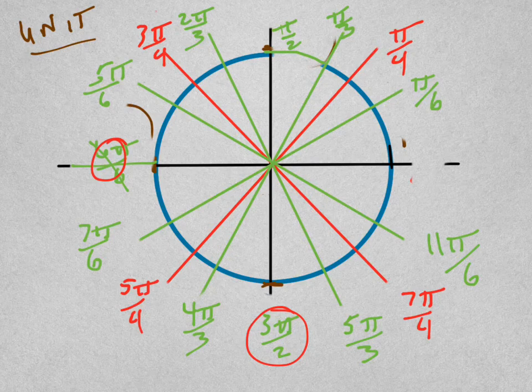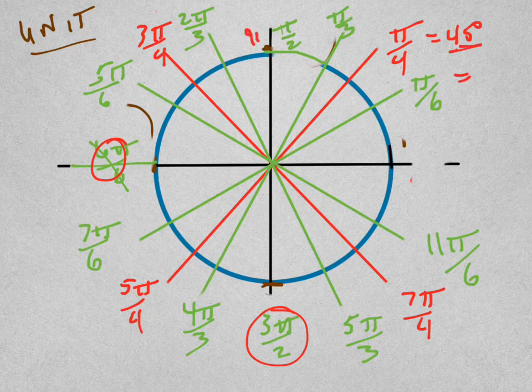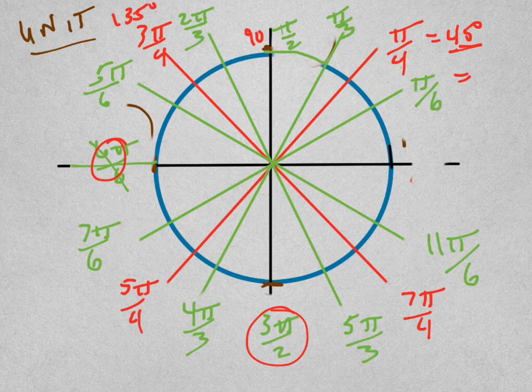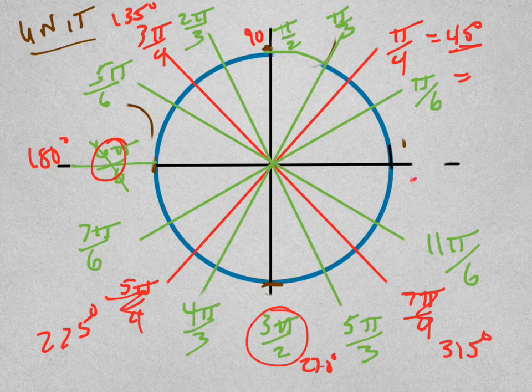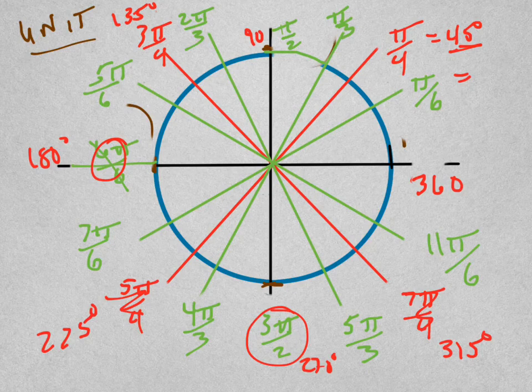Now if you're going to do degree measures, this is just forty-five degrees, so just keep adding forty-five. Forty-five plus forty-five is ninety, ninety plus forty-five is one-thirty-five, one-thirty-five plus forty-five is one-eighty, one-eighty plus forty-five is two-twenty-five, two-twenty-five plus forty-five is two-seventy, two-seventy plus forty-five is three-fifteen, three-fifteen plus forty-five is three-sixty.